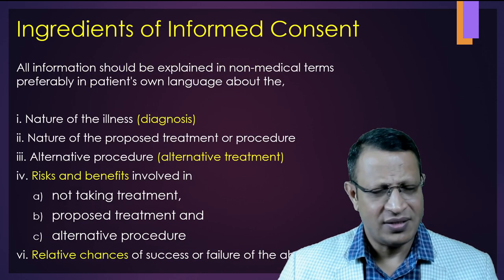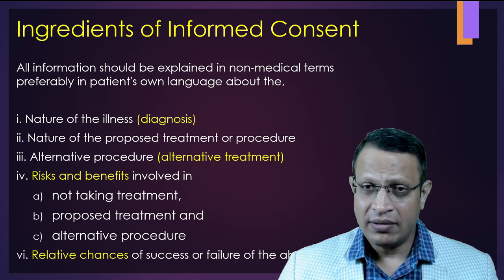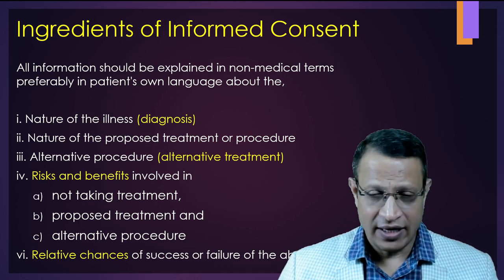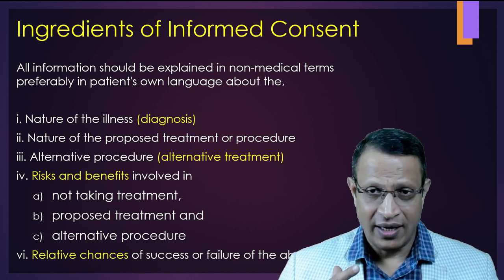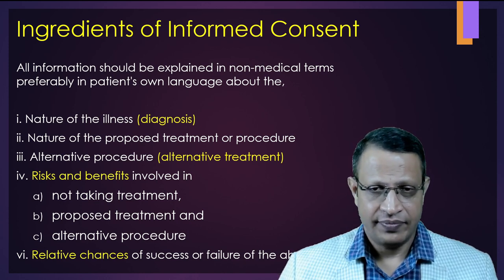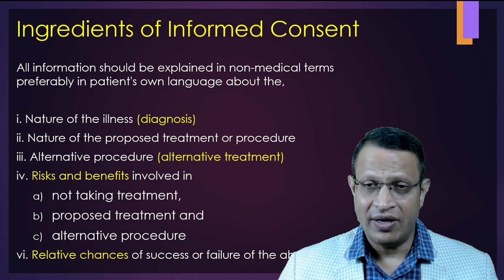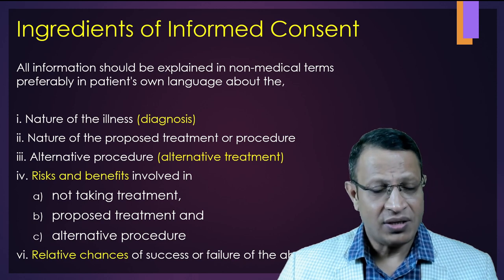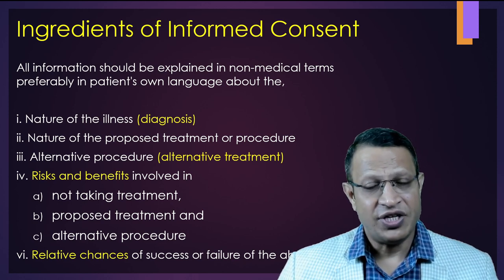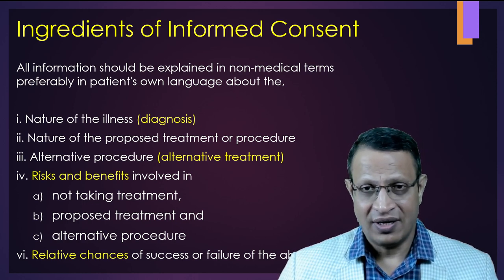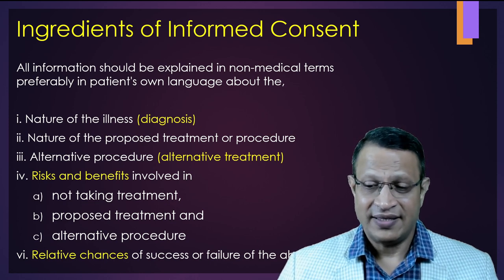The first ingredient is providing unbiased information. The doctor needs to give information about the diagnosis, possible diagnosis, or differential diagnosis. Next, the proposed treatment or procedure must be discussed — what are the side effects, what are the benefits, what are the alternative procedures available. The risks and benefits of not taking treatment, taking treatment, the proposed procedure, and alternative procedures must be discussed, along with the relative chances of success or failure.